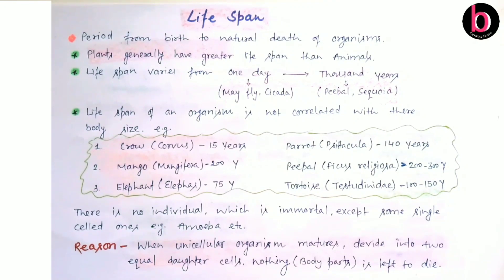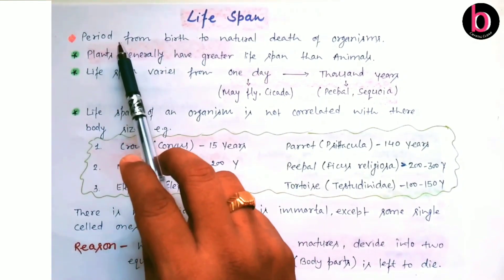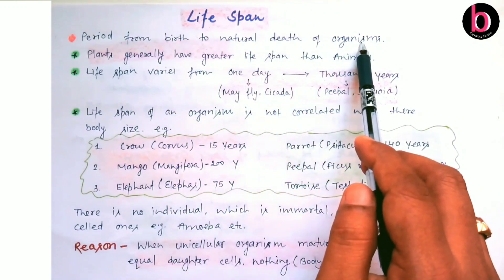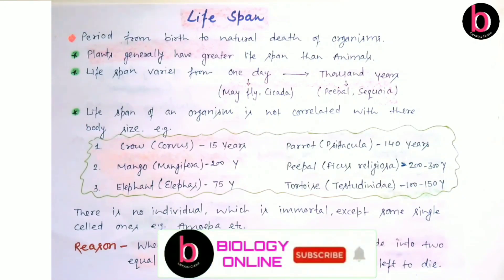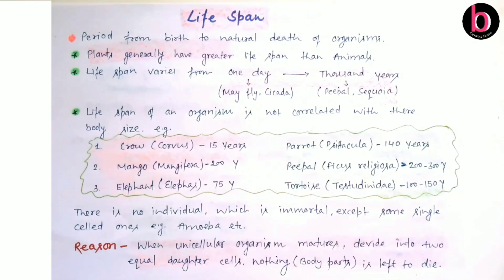In this video we will discuss life span and its several aspects. The definition of life span is the period from birth to natural death of an organism. Death due to accident or disease is not considered part of life span — only natural death counts. For example, if a human dies at age 10, 20, or 30 due to disease or accident, that is not considered their natural life span.